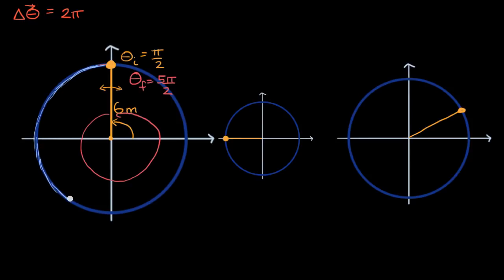Think about what that distance is. Also think about what the displacement of the ball would be. The ball ends up where it started, so the displacement is zero — we're not talking about angular displacement, just regular displacement, which is zero. The angular displacement was two pi radians.